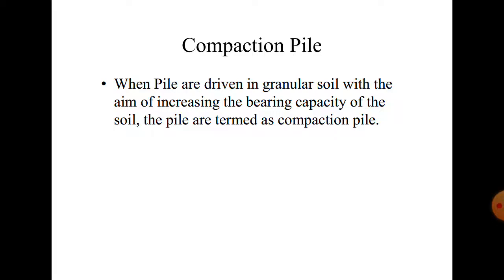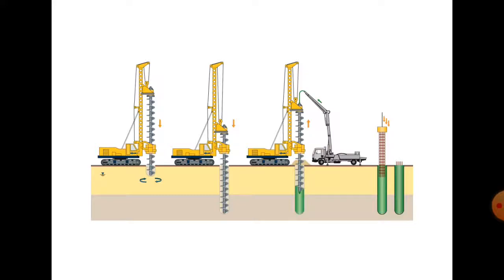Next is compaction pile. When a pile is driven into granular soil with the aim of increasing the bearing capacity of the soil, the pile is termed a compaction pile. First, the soil is drilled by a cutter. The machine drills the soil and a clockwise spiral cuts and removes the soil in circular form. Then concrete is pumped and inserted into the pile hole. Steel bars are used to provide strength to the concrete. The steel bars are forcefully inserted into the ground to prepare the compaction pile.